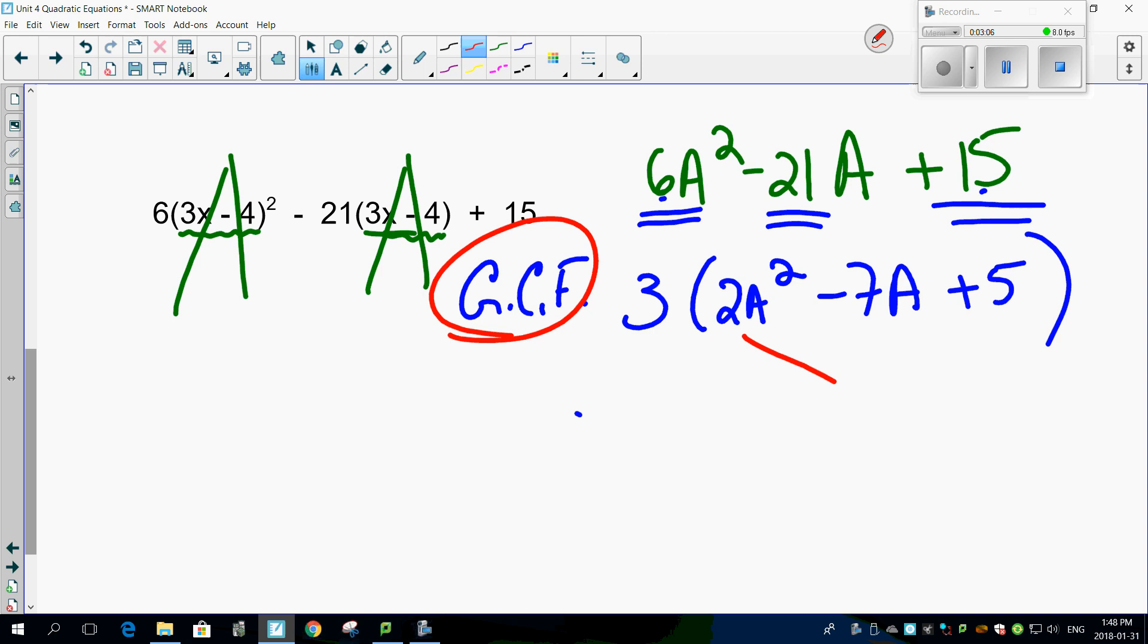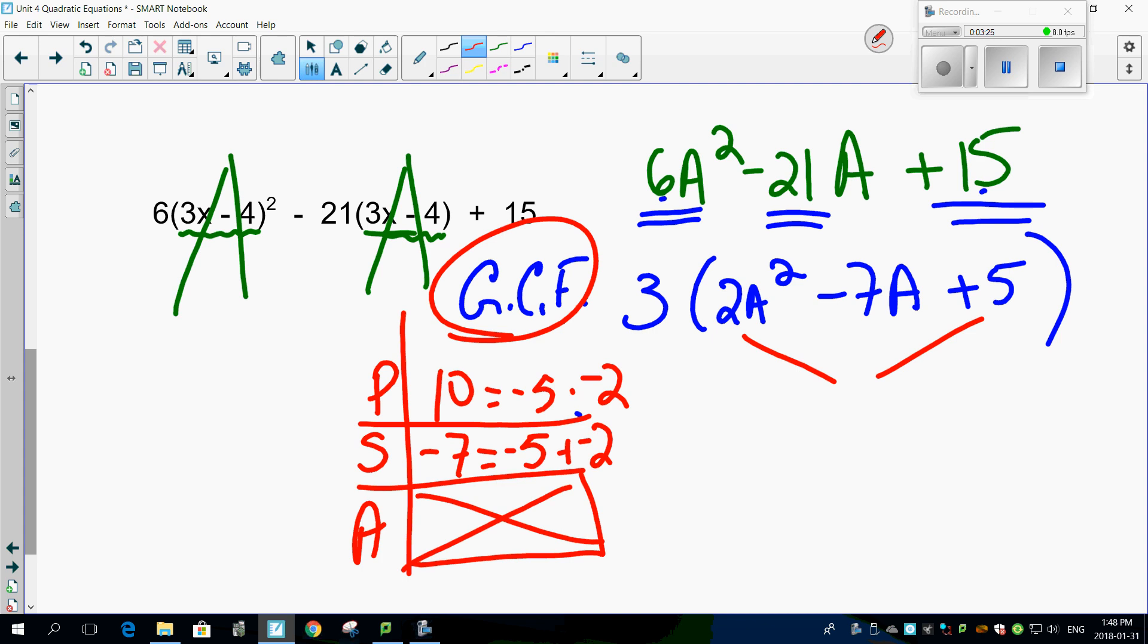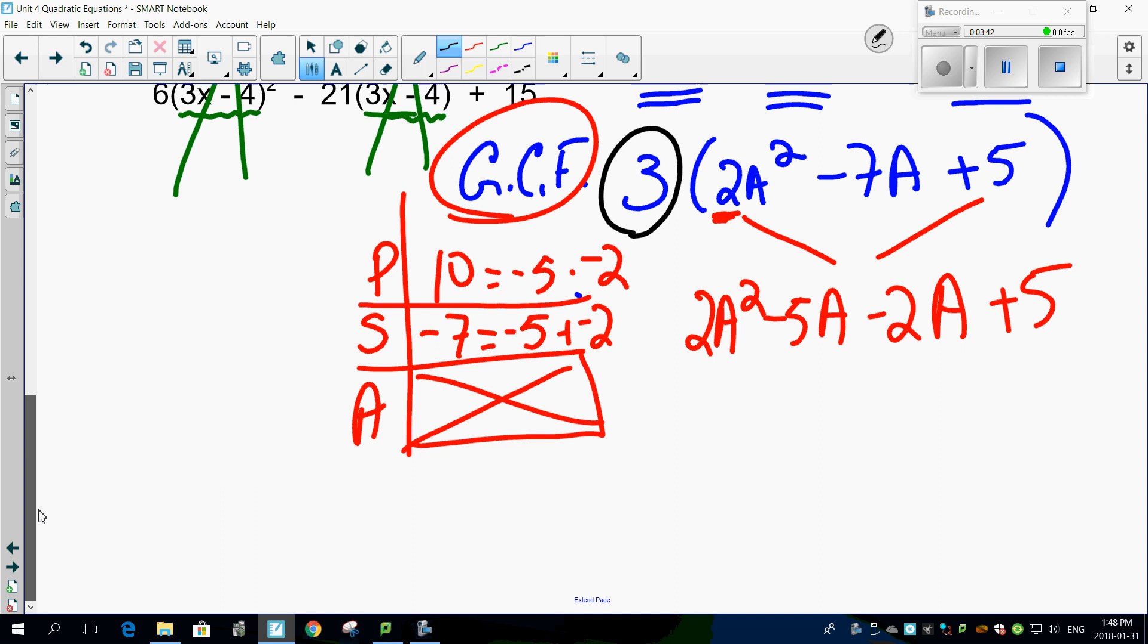Leaving me 2A squared, minus 7A plus 5. That's so much easier to PSA, isn't it? Aha! So don't forget about good old faithful greatest common factor. So here we go. 2 times 5, 10. Sum has to be minus 7. Making both of these negative. And again, you can't put the answer down because why? There's a number up front. So 2A squared minus 5A minus 2A plus 5.